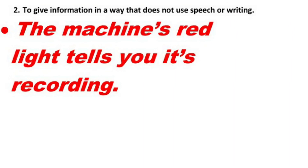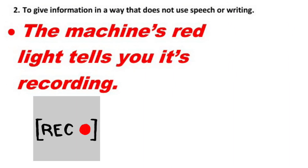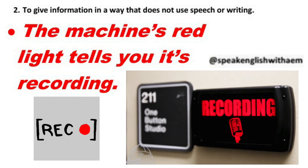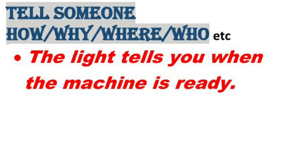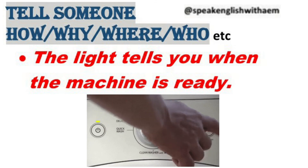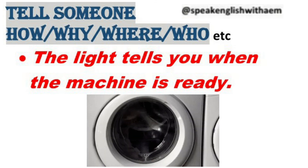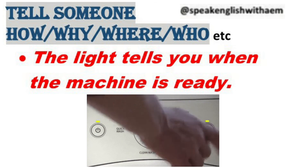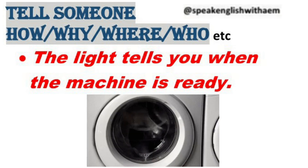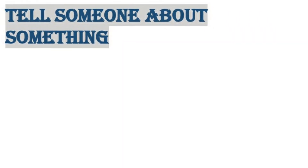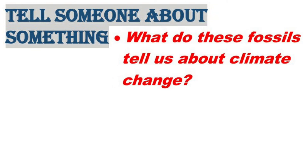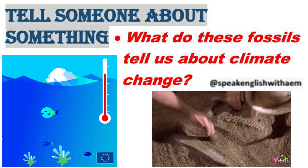Examples for the second use. The machine's red light tells you it's recording. Tell someone how, or why, or where, or who, etc. For example: The light tells you when the machine is ready. Tell someone about something. For example: What do these fossils tell us about climate change?